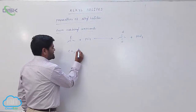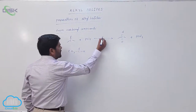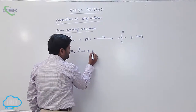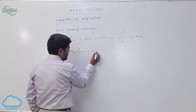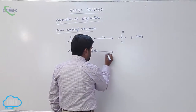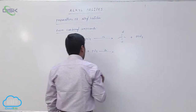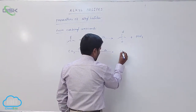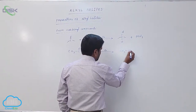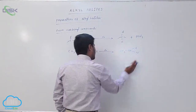When acetaldehyde reacts with Phosphorus Pentachloride, followed by heating, it converts into CH₃CHCl₂.